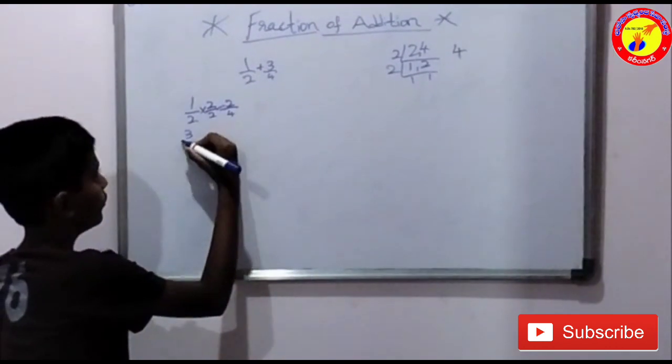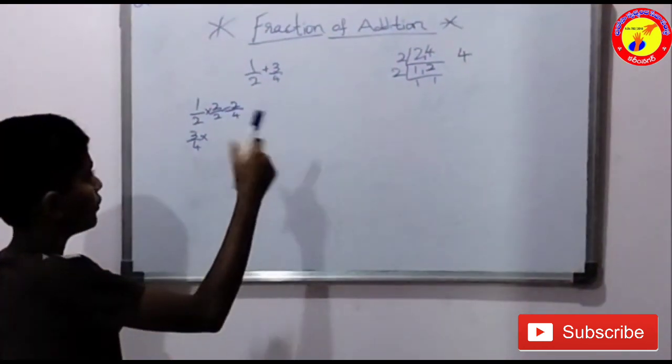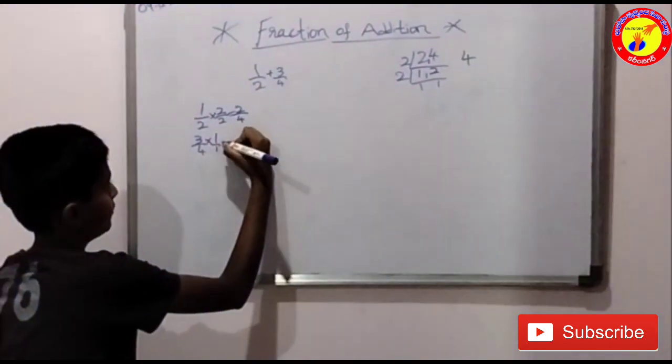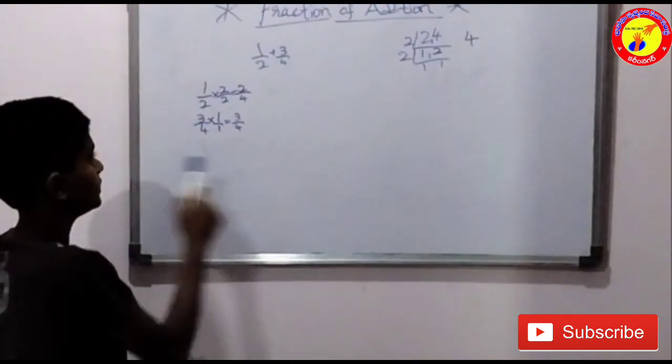Again 3 by 4 - in 4 table we have 4. 4 ones are 4. 1 by 1 is equal to 3 by 4. The answer is 3 by 4.